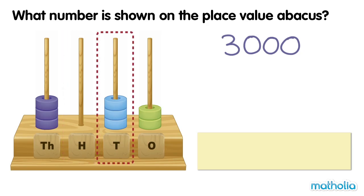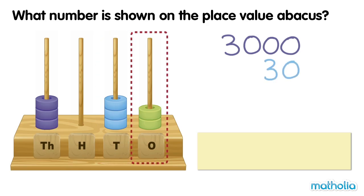In the tens place, there are three beads. The value is thirty. In the ones place, there are two beads. The value is two.